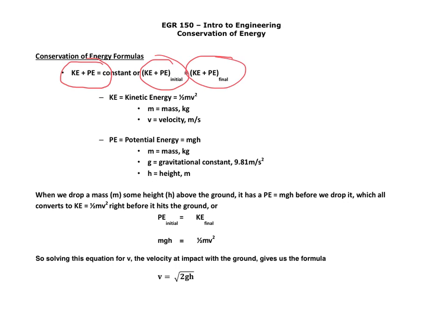So let's look at a particular case. When we drop a mass m some height h above ground, right before you drop it, it's all potential energy, right? It's stored. It's ready to be used, but it's not being used at that time. So the potential energy at that point, all the energy that it has is potential. And that's equal to mass times gravity times height.